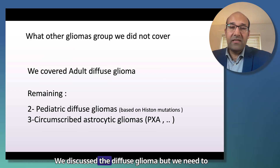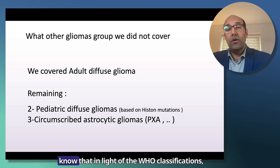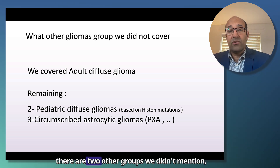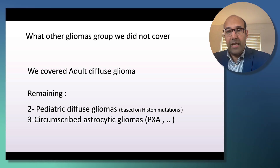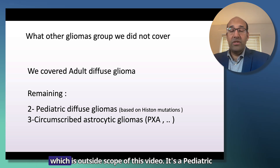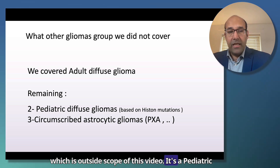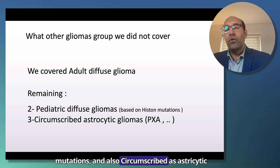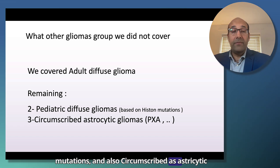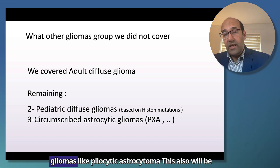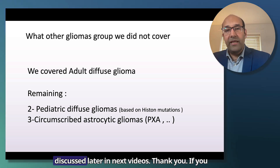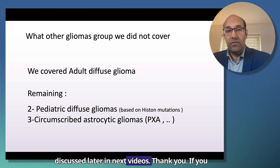We discussed diffuse gliomas, but we need to know that in the WHO 2021 classification there are two other groups we didn't cover, which are outside the scope of this video: pediatric diffuse gliomas, which are usually based on histone mutations, and circumscribed astrocytic gliomas like pilocytic astrocytoma, which will be discussed in future videos.